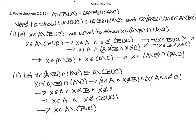Here is my proof for number 5, with one important note: when X ∉ B ∪ C, that is the negation of X ∈ B ∪ C. By definition of union, X ∈ B ∪ C means X ∈ B or X ∈ C. When you negate that, you get X ∉ B and X ∉ C — negating an 'or' flips it to an 'and.' Remember how to handle this negation.